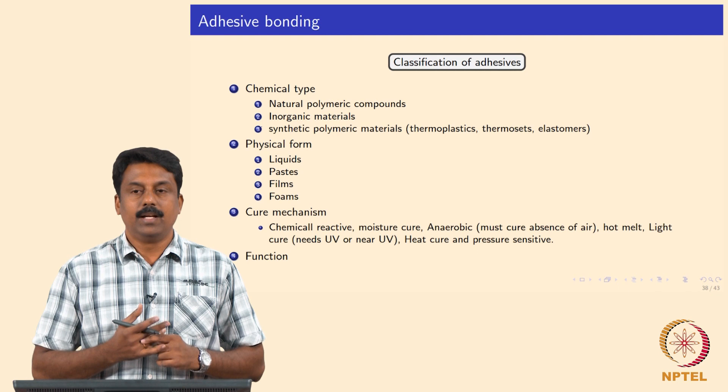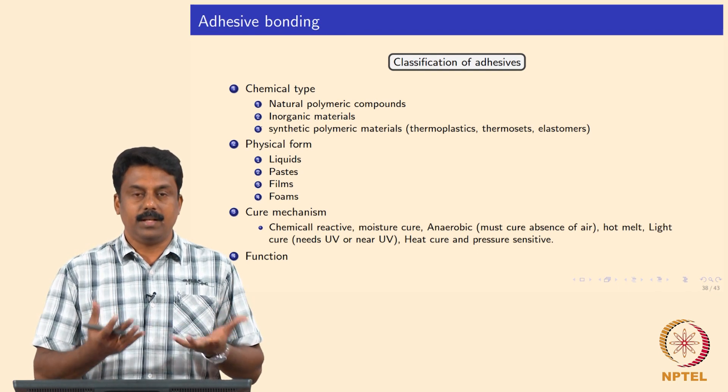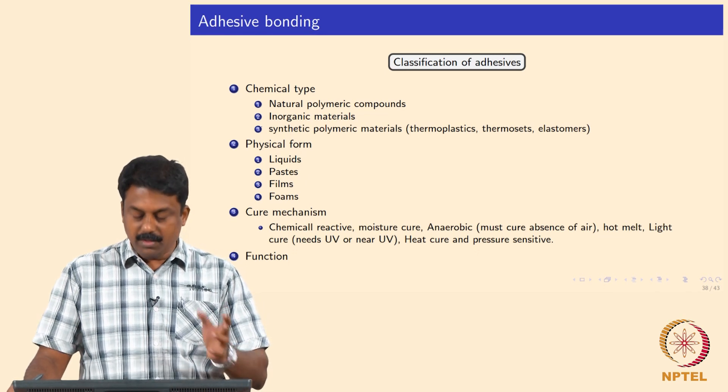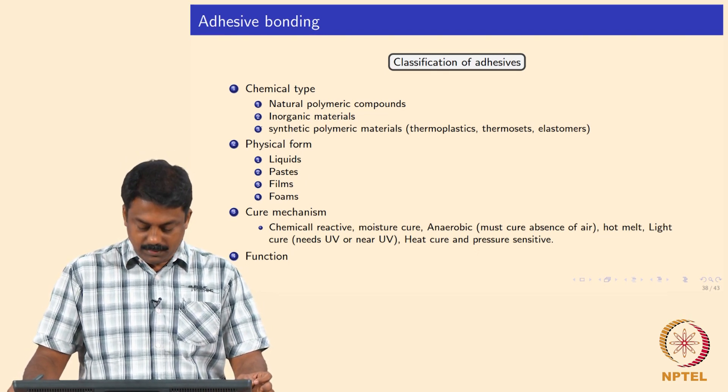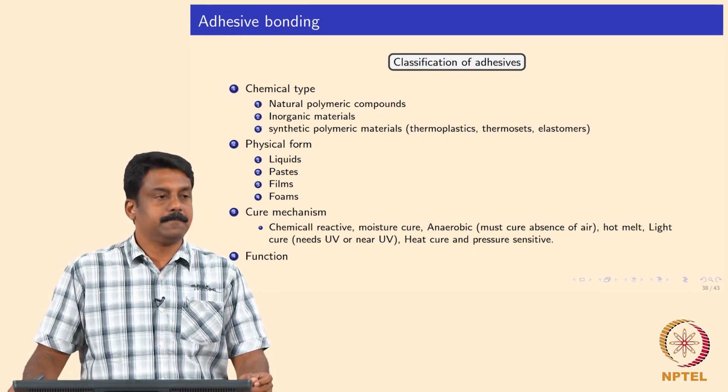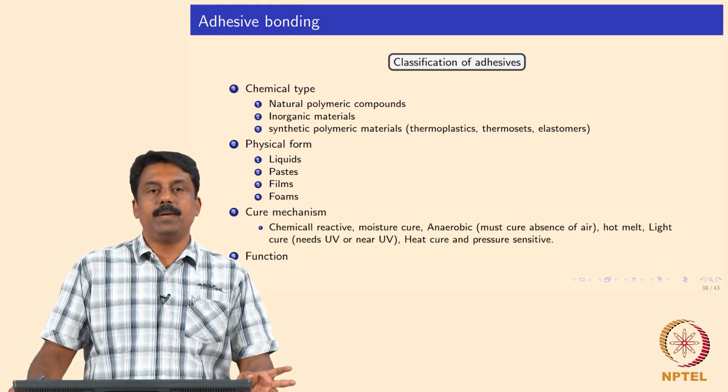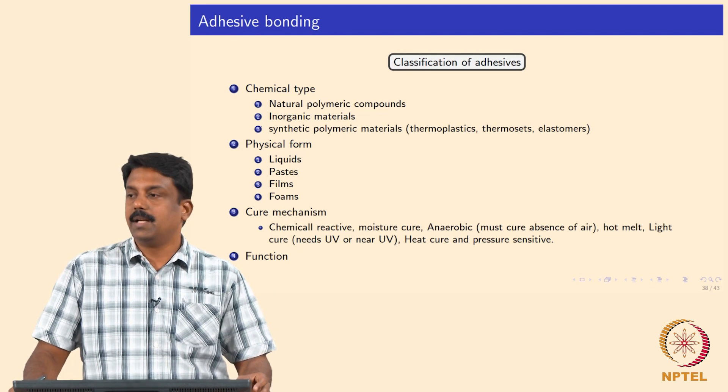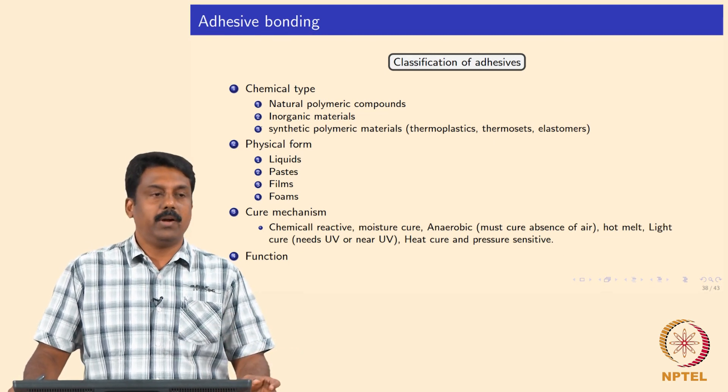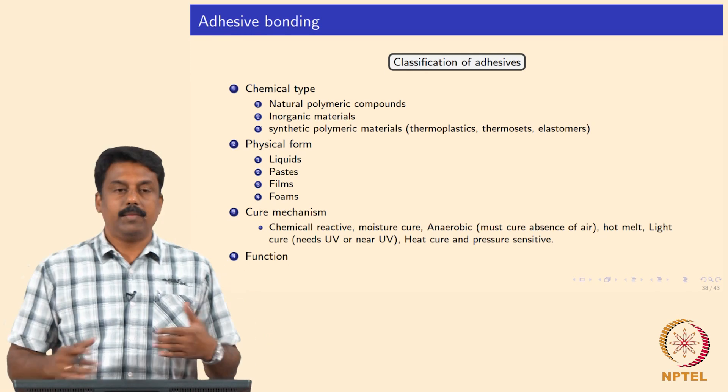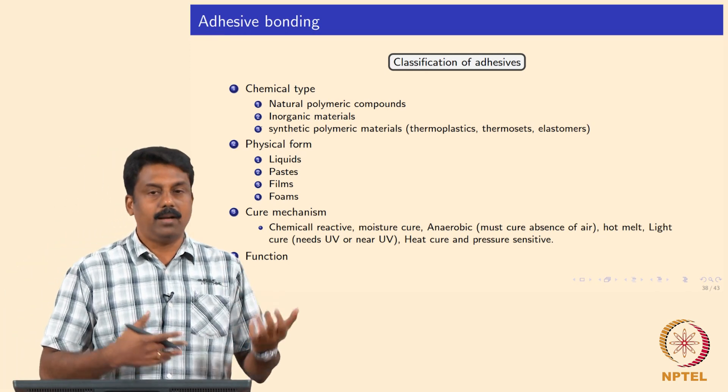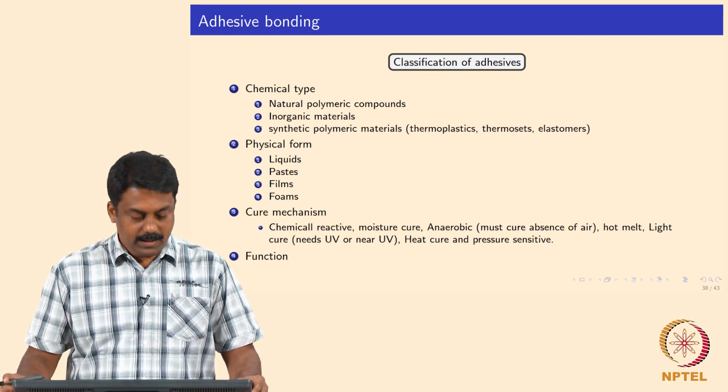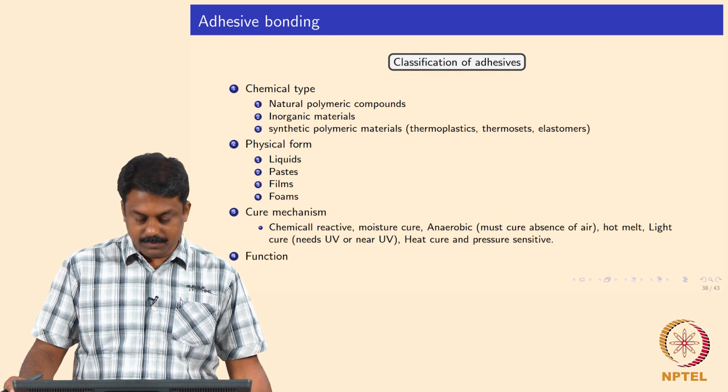UV reacts with the polymers and then molecular entanglement can take place by the induced UV reaction. You can also use microwave or pressure heat cure. You can also classify based on the functions - adhesives used for joining alloys, or adhesives used to join dissimilar materials with metal and polymer. You can classify based on the function as well.